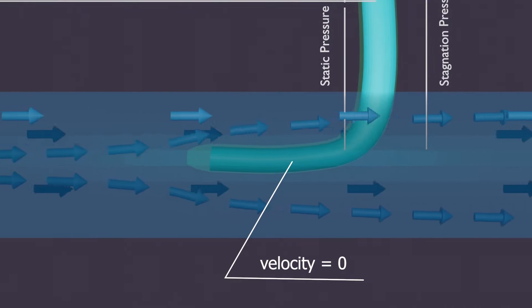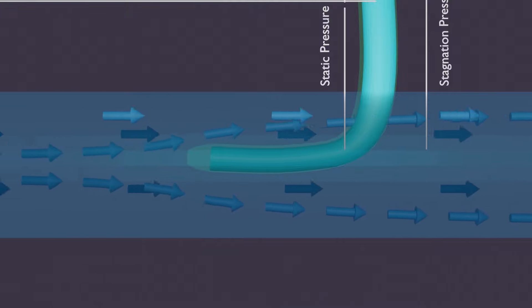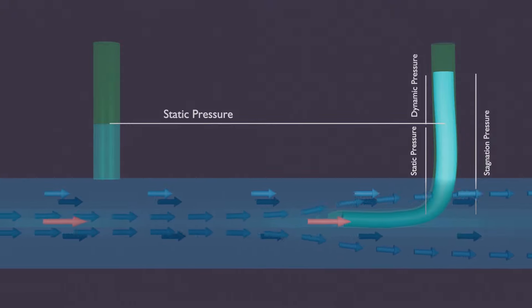Now let us apply the Bernoulli equation and derive the formula for stagnation pressure. For that, let us write point 1 and point 2.